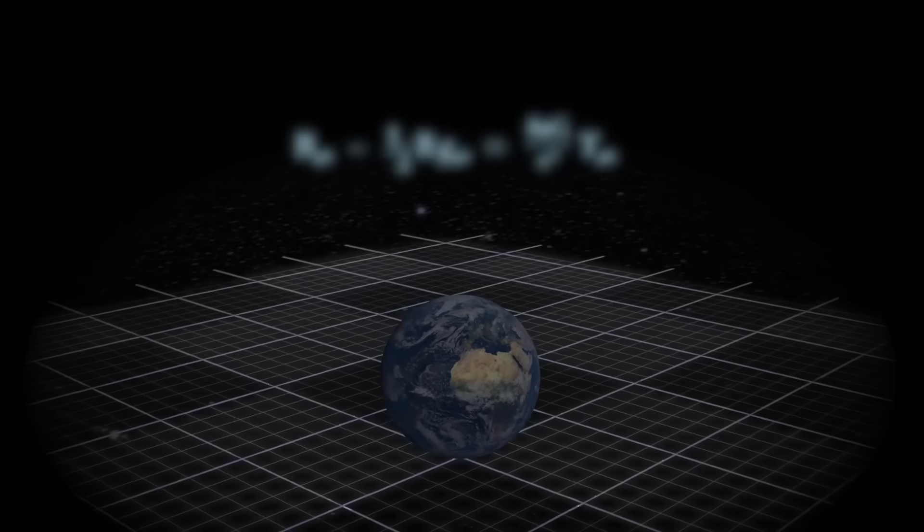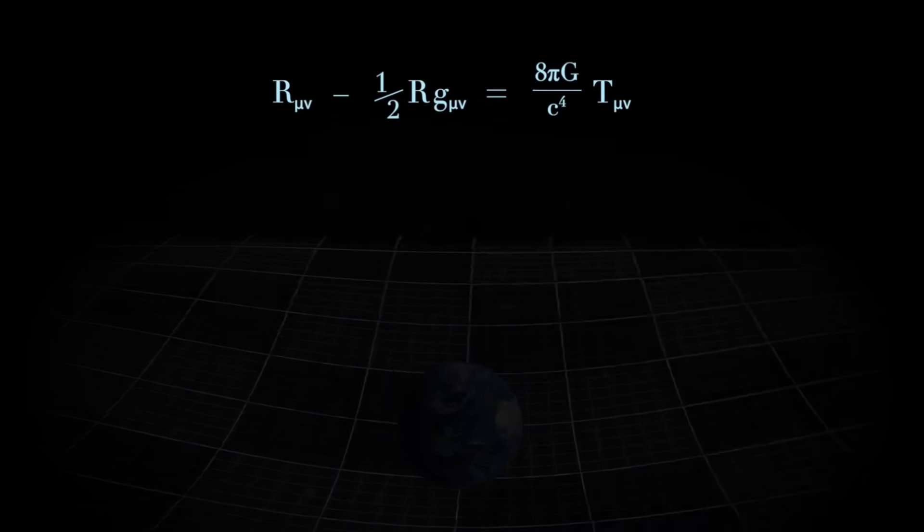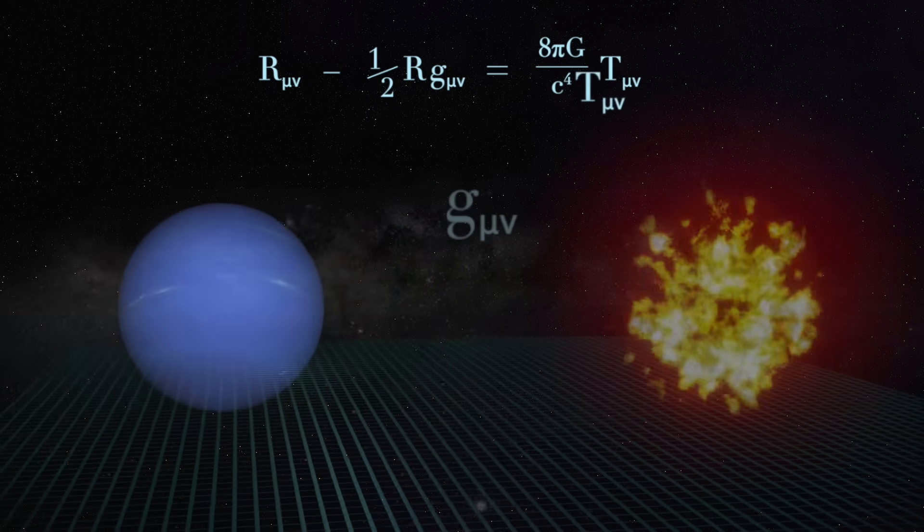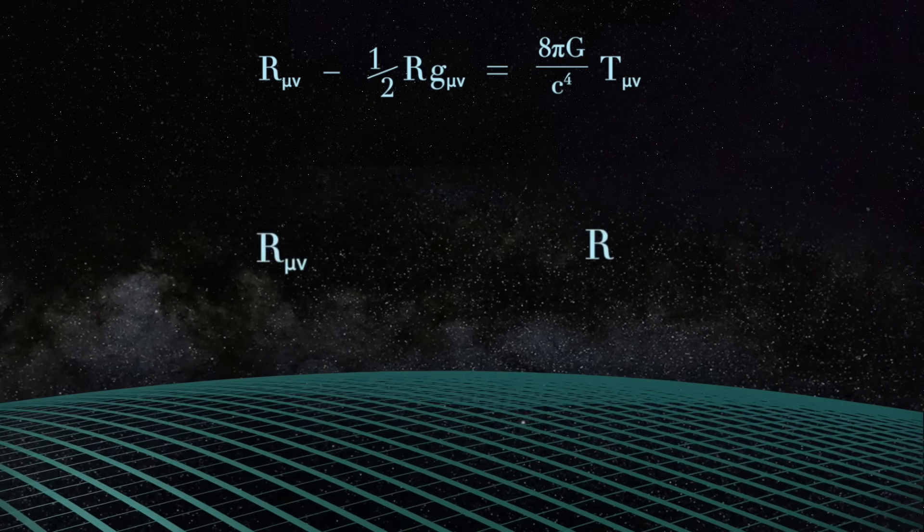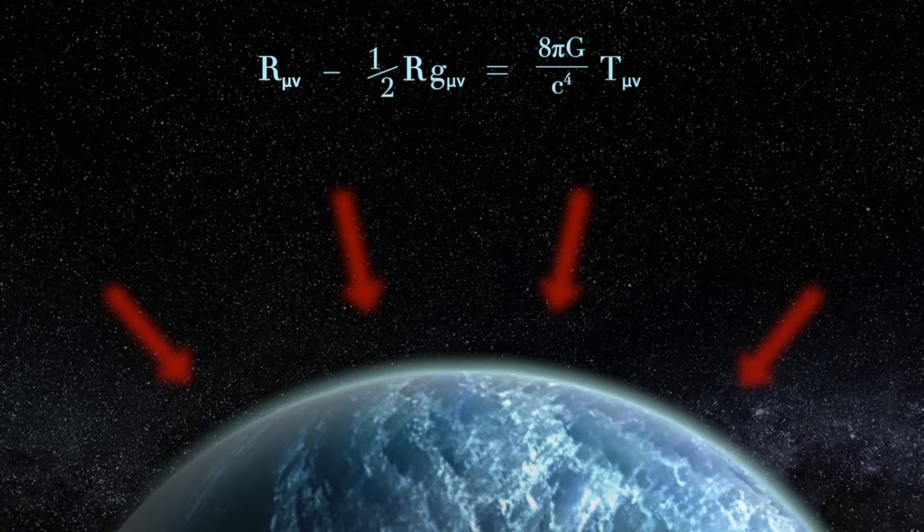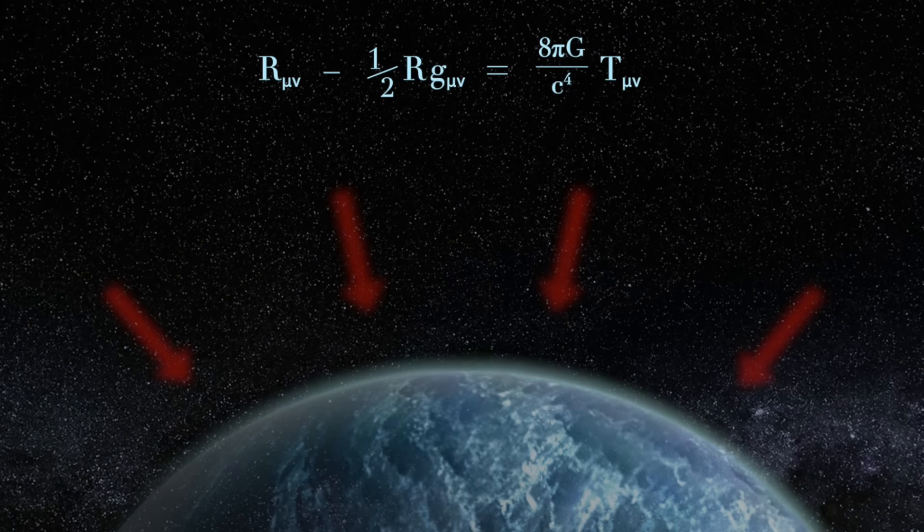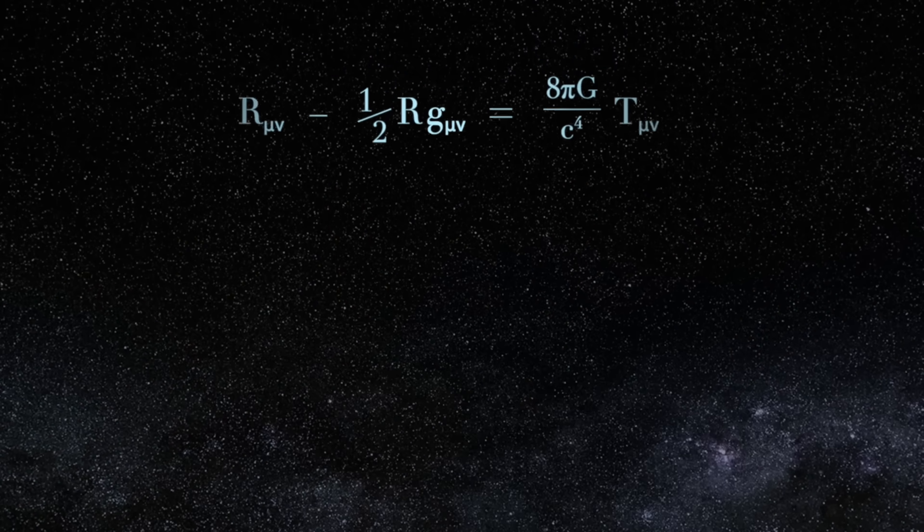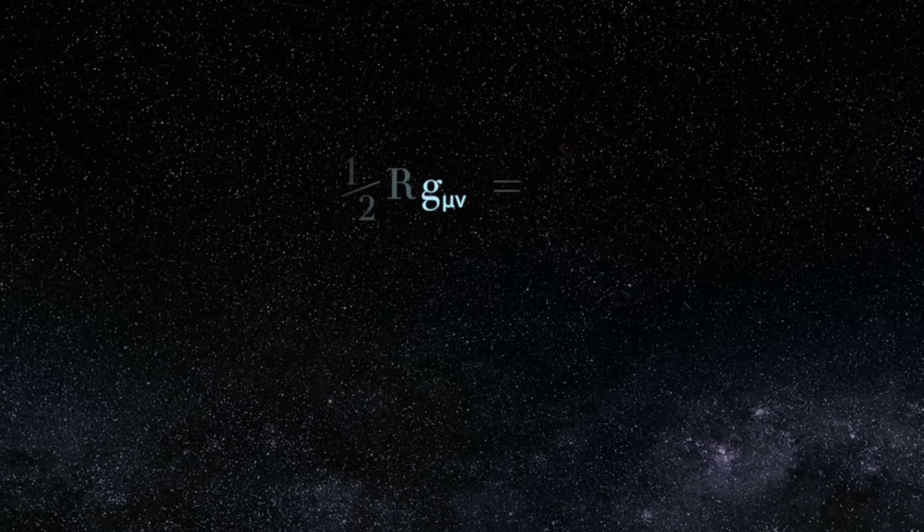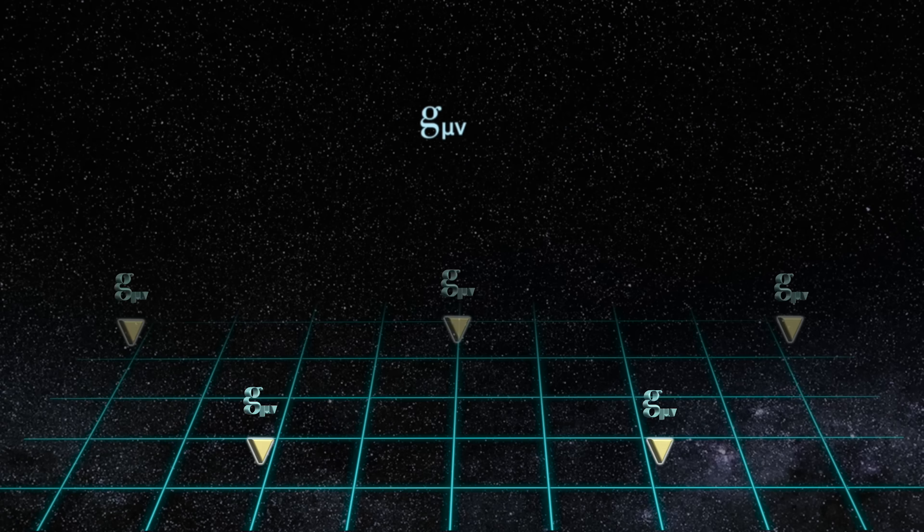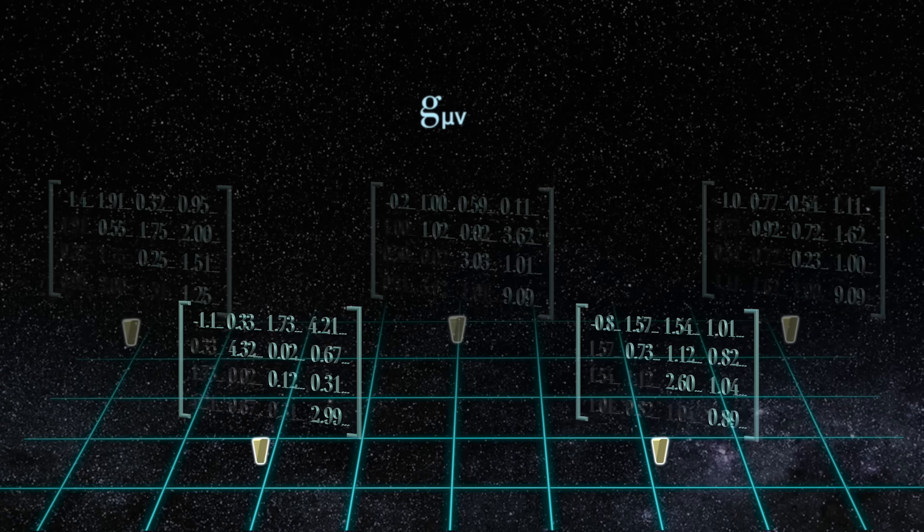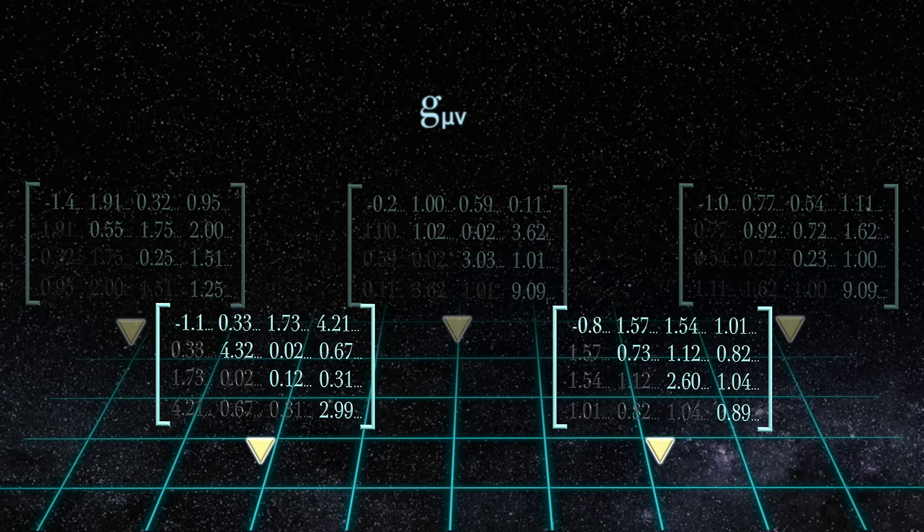The equations of general relativity tell us that matter and energy alter the metric of space-time, resulting in a four-dimensional curvature that's synonymous with gravity. The key to understanding general relativity, then, is locked away somewhere in this notion of a metric, which at every point across space and time is characterized by 10 numbers in the form of a mathematical object called a tensor.